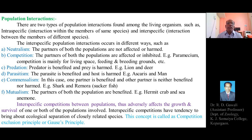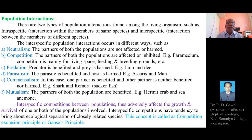The interspecific population interactions occurring between members of different species occur by different ways, such as neutralism, competition, predation, parasitism, commensalism, and mutualism. These are the important types of population interactions.